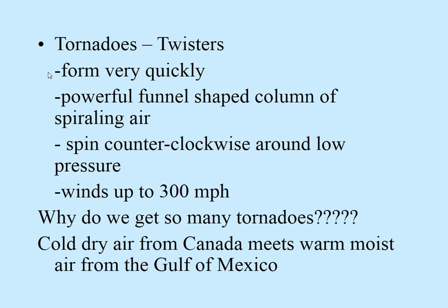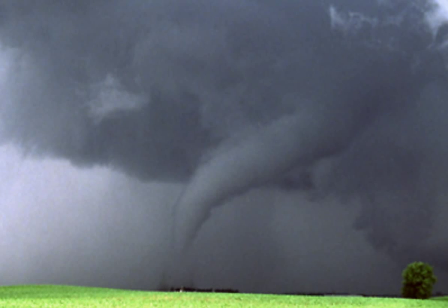Tornadoes — we're very familiar with those in our area. They form very quickly: a funnel-shaped cloud, a column of spiraling air that spins counterclockwise. Some can reach up to 300 miles an hour — those are your F5s, the big ones that do real damage. Notable ones include the one in Missouri, the one in Tuscaloosa, Alabama, and the one that hit Wichita Falls in '79.